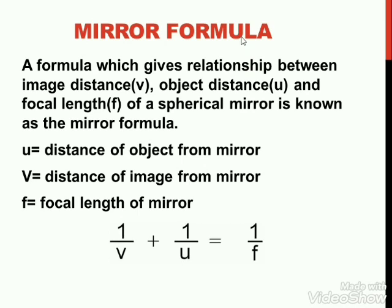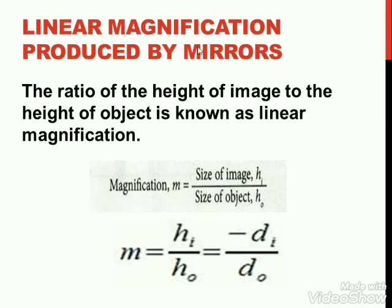The mirror formula gives the relation between image distance, object distance and focal length: 1/v + 1/u = 1/f, where v is image distance, u is object distance, and f is focal length. Linear magnification produced by mirrors is the ratio of height of image to height of object: m = height of image / height of object, which also equals −v/u.